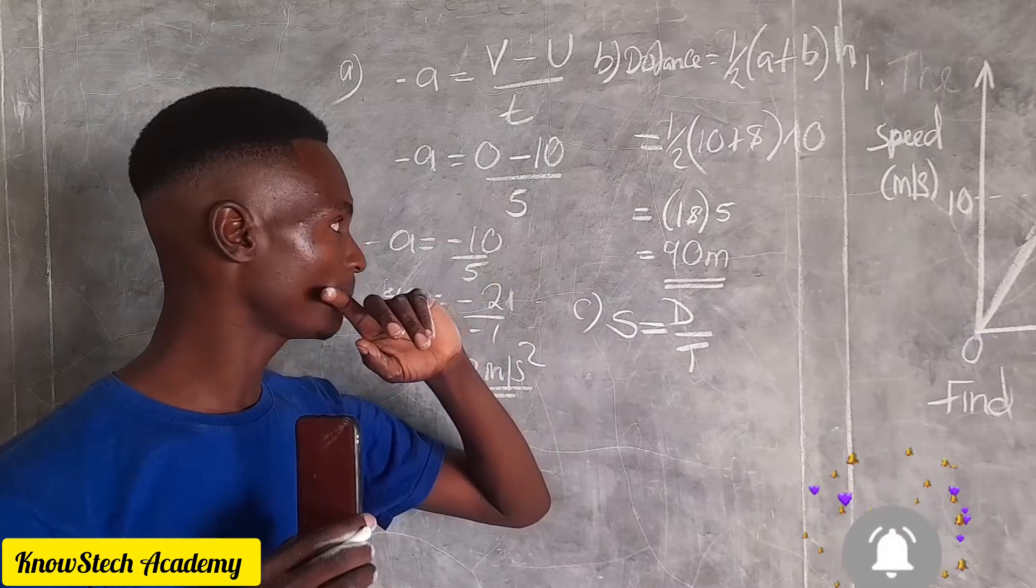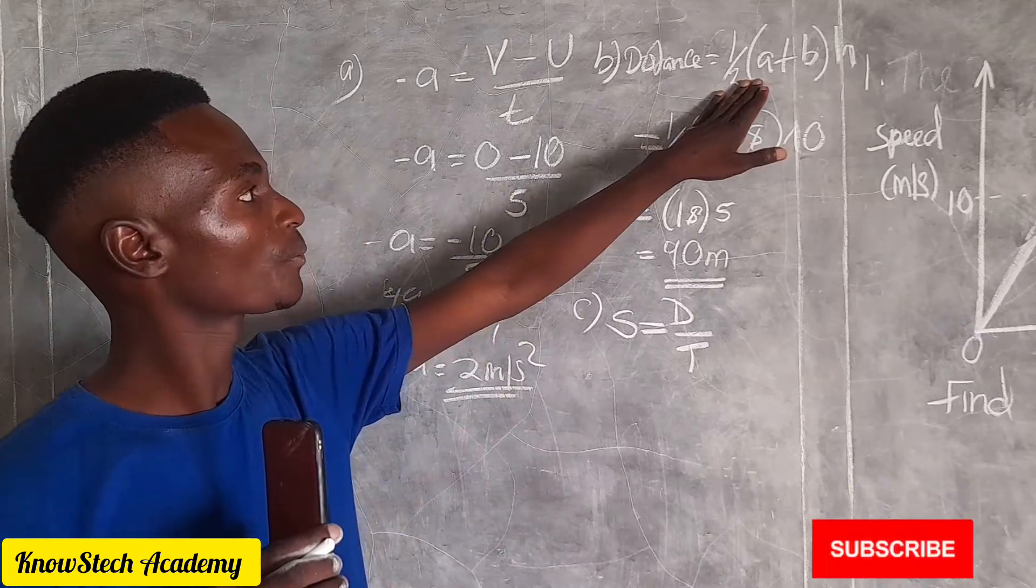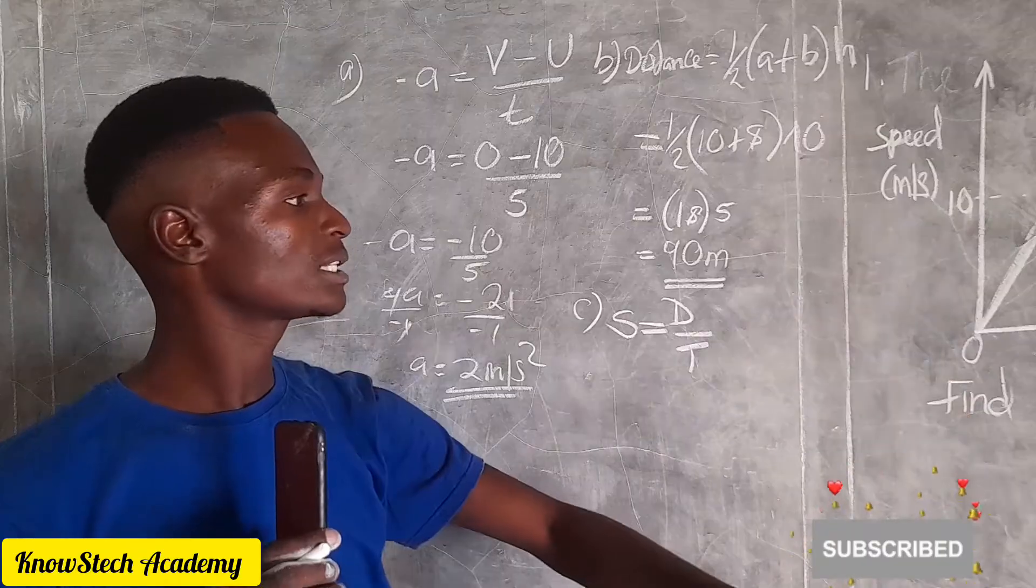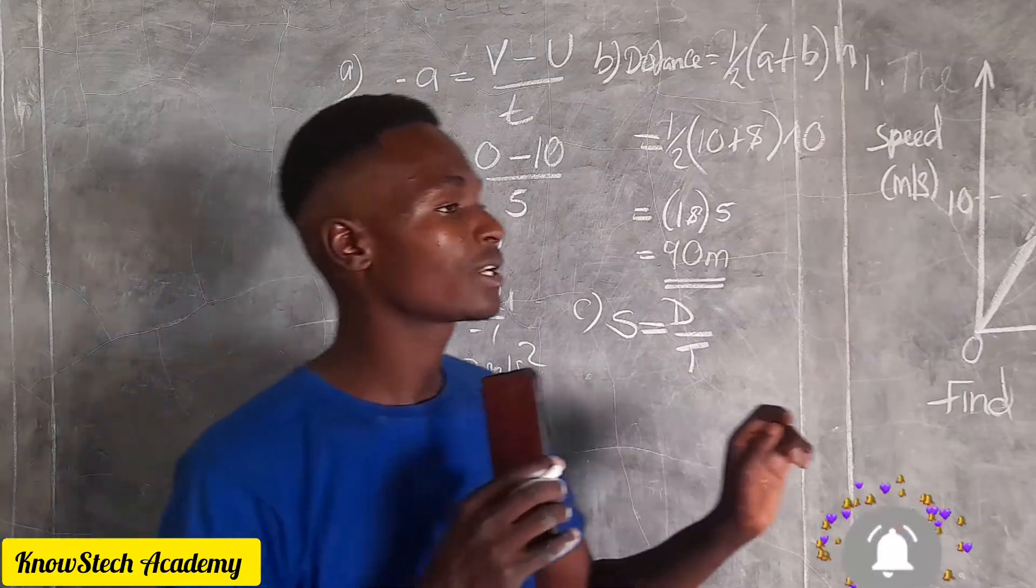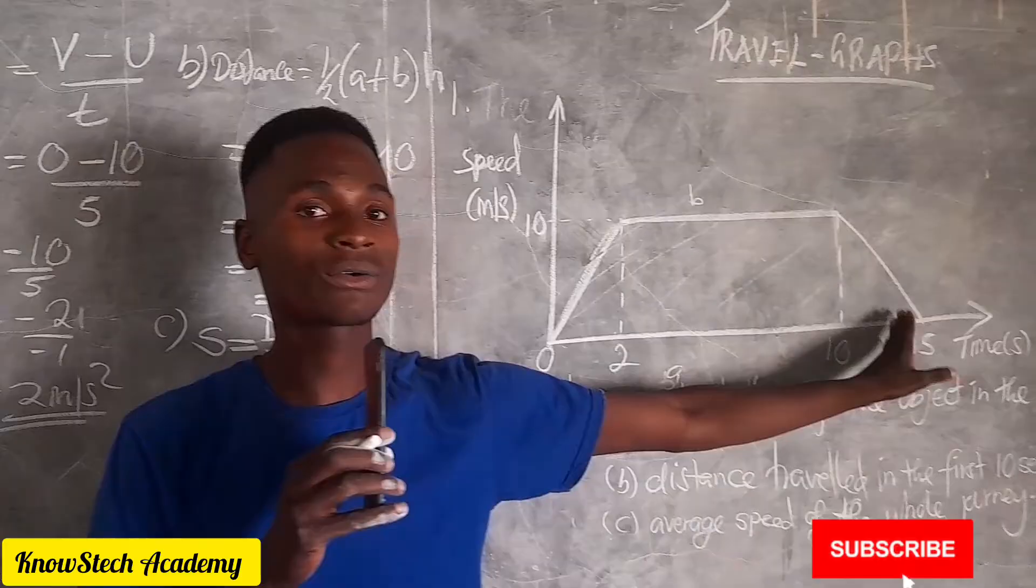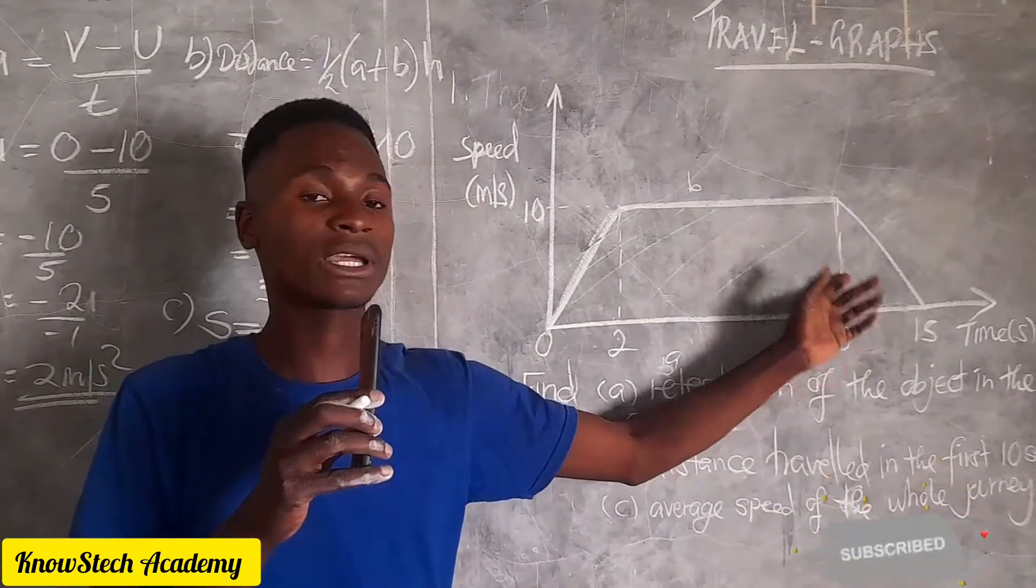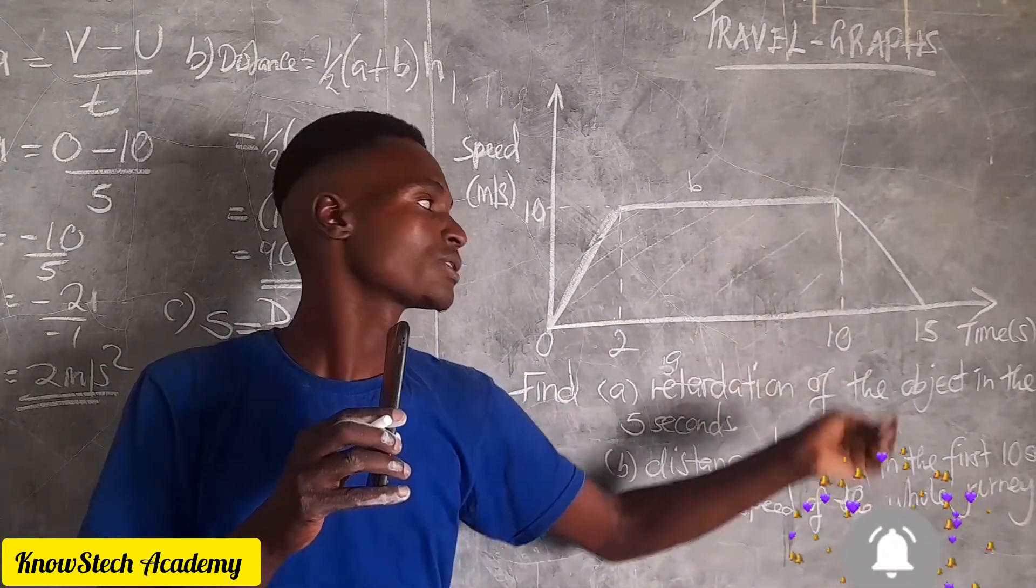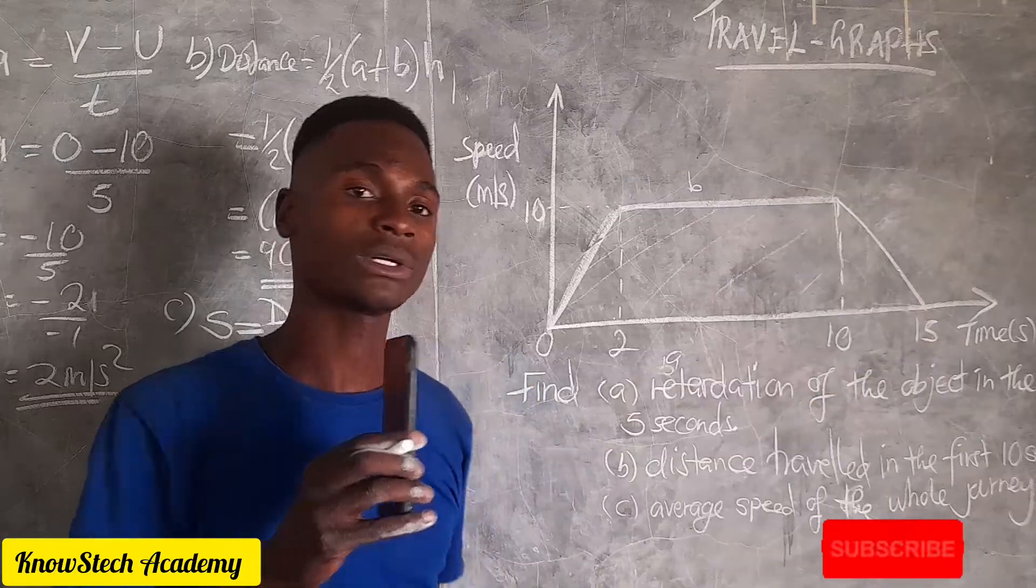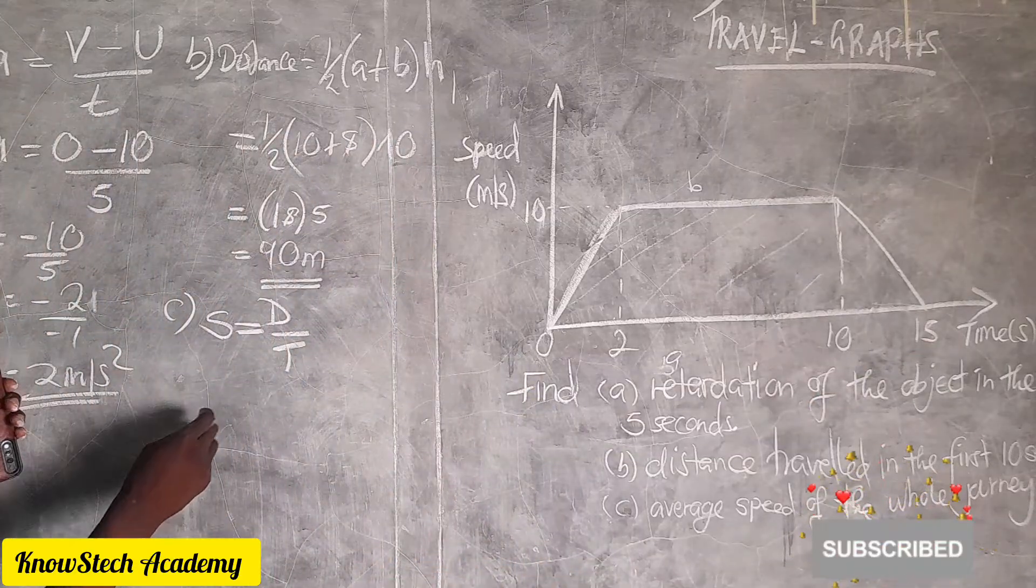The easiest way we can calculate here, we can use the trapezium to find the whole distance, or we can just calculate the distance of the last part of this triangle, then add it to the distance we've covered here to come up with the total distance.